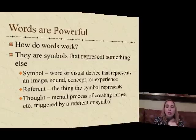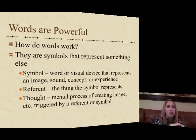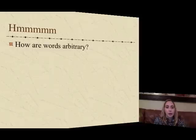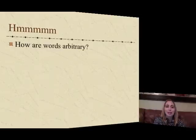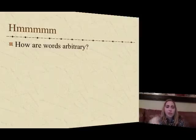Then you have a thought, which is the mental process of creating the image triggered by the referent or symbol. While they are three separate things, they all work almost simultaneously when you see or hear a word. I want you to understand them as three distinct concepts, but also understand they are pretty synchronized — the word, the thing, and the image all fuse at once, because that's the way we make sense of language. So, how would you say words are arbitrary — how are they random or assigned? Think about that for a moment.